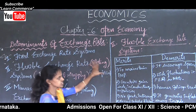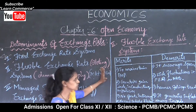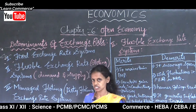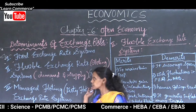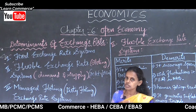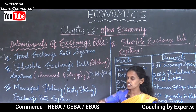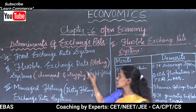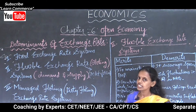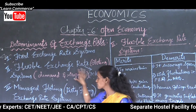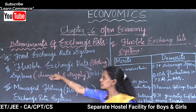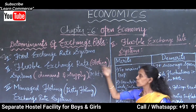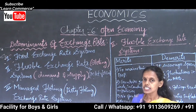Flexible exchange rate system is not at all rigid. Because when the demand changes, the exchange rate changes. When the supply changes, the exchange rate may change. Exchange rate changes according to the market forces, that is demand and supply. Thus, it is said to be the flexible exchange rate system or floating exchange rate system.